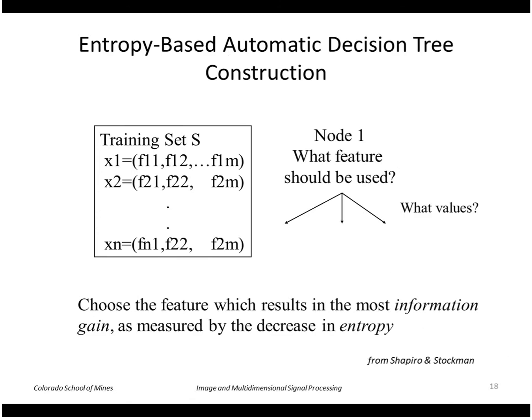So one problem is how you build this tree automatically. What we want to do is we want to choose the test at each node that best splits the tree evenly. In other words, we want to be equally likely to go into any of the branches based on our population of vectors that we think we have. So formally, this is the feature that results in the most information gain as measured by the decrease in entropy.